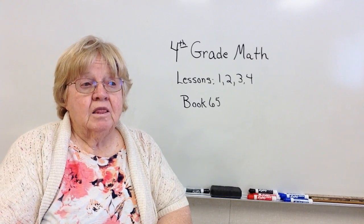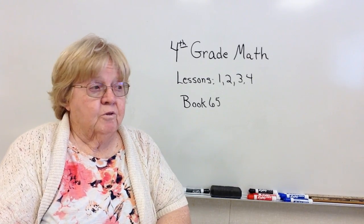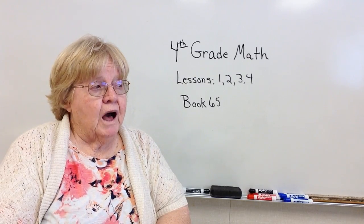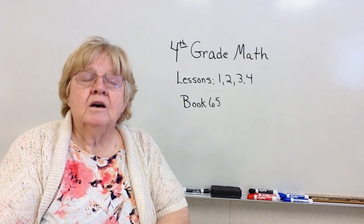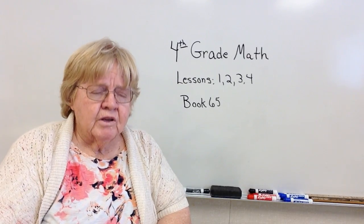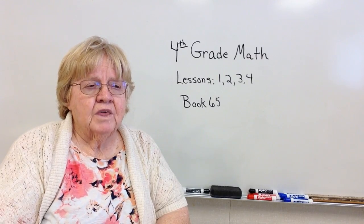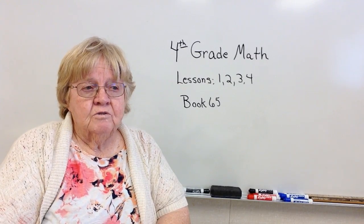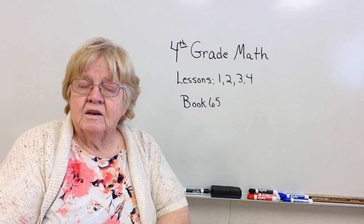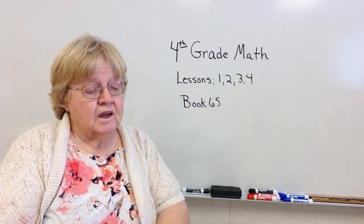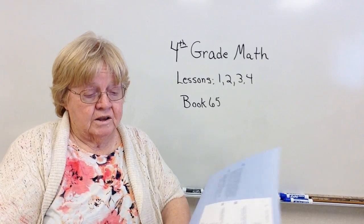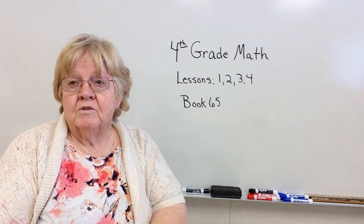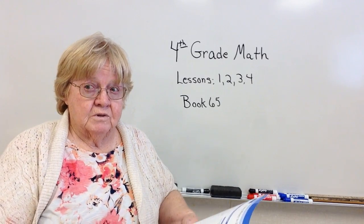If you have a long number that is four or five digits long and you say, how do I know if it's even or odd? Just look at the last number of that number. If it's a 0, 2, 4, 6, or 8, it's even. If it's not, then it's odd. I know you guys know the difference between even and odd numbers.